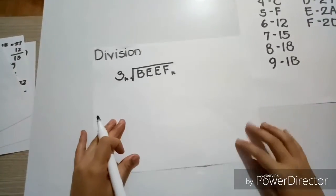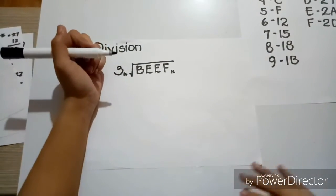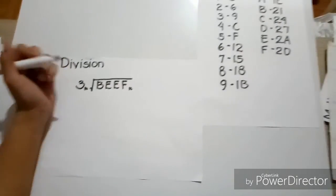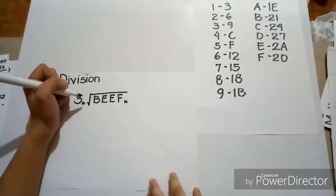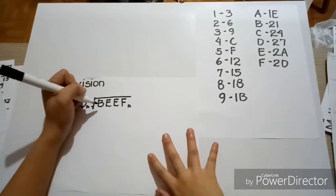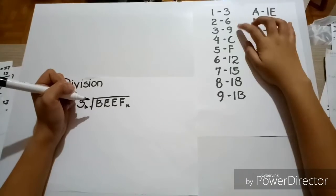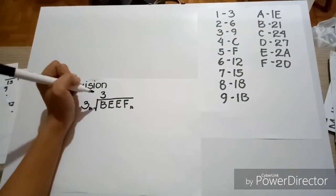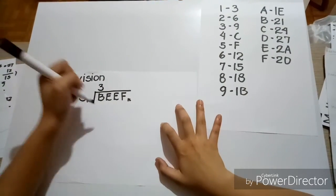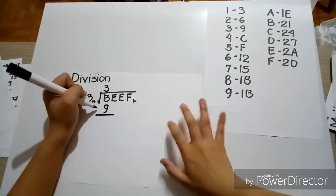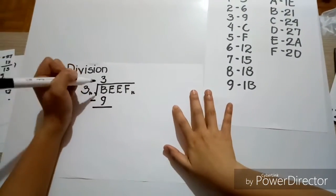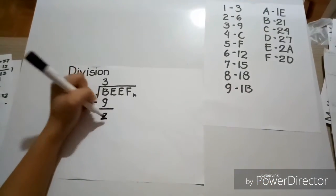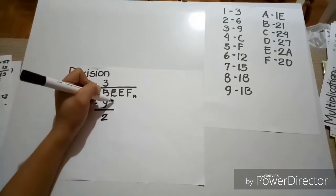Now, lastly, for the division, we're going to use this. Now, how many times can 3 go into B, since B is equal to 11? So, basing it in here, we'll use 3. And 3 times 3 is equal to 9. Now, subtracting it, since B is equal to 11, then 11 minus 9 is equal to 2. Then, let's bring this down.